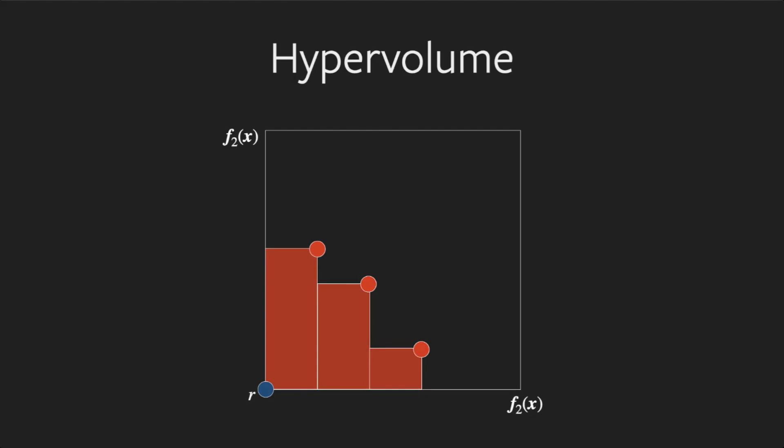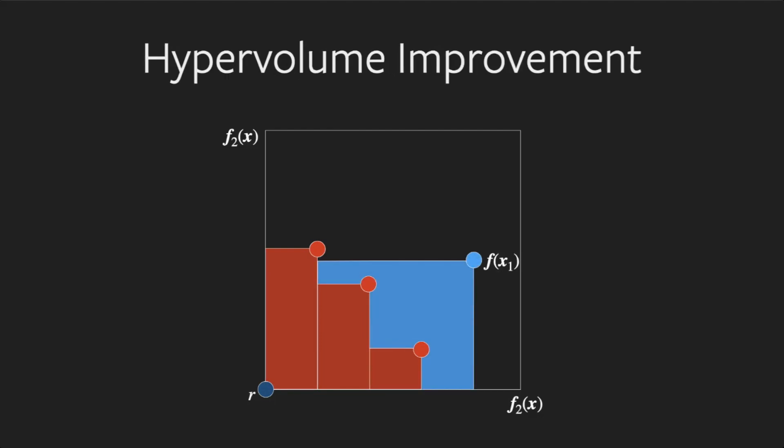A natural measure for the quality of a Pareto front is the hypervolume dominated by the Pareto front and bounded from below by a reference point. The hypervolume improvement from a new point is the hypervolume dominated exclusively by that point.